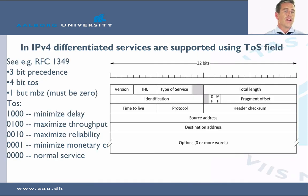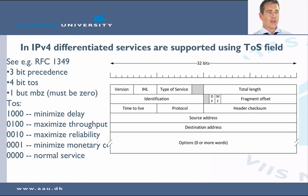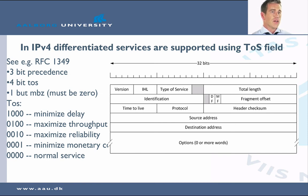In IPv4, the differentiated services are supported using the TOS (Type of Service) field. Looking at the header, there are some bits reserved for it. There are various RFCs (Requests for Comments) which you can check out in order to understand how to use it.